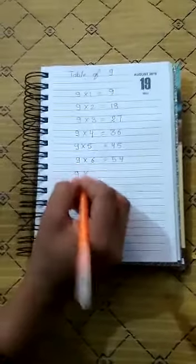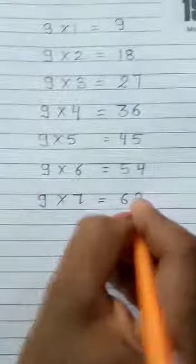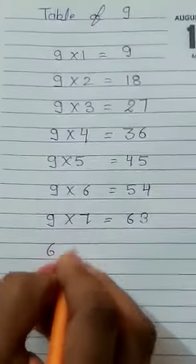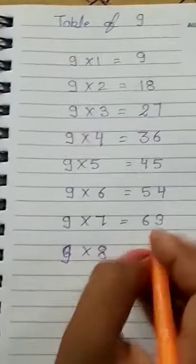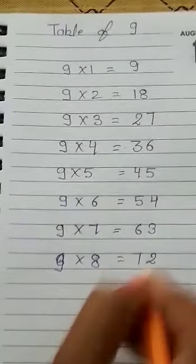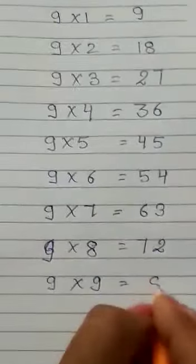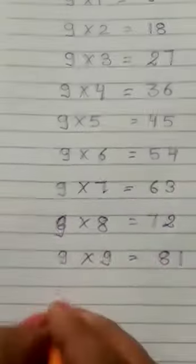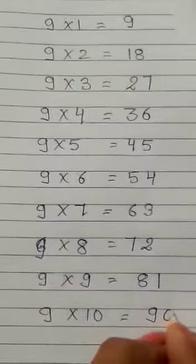9 7's are 63. 9 8's are 72. 9 9's are 81. 9 10's are 90.